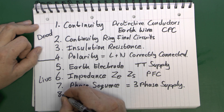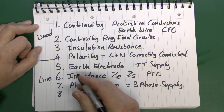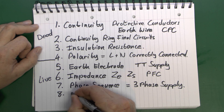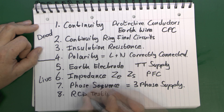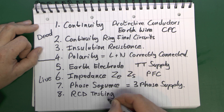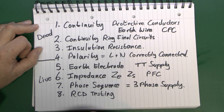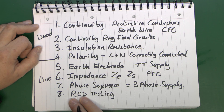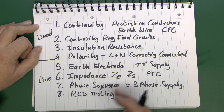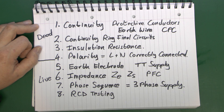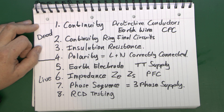Number eight is RCDs. Again, this only applies if you've actually got one or more RCDs. But given the current regulations, a considerable majority of circuits do now require them, so you will need to perform the tests on those devices.